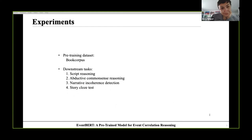Our model continually pre-trained on book corpus. For continual pre-training, we use Roberta-Large as our base model. We evaluate EventBERT on four downstream tasks, including script reasoning, abductive common sense reasoning, narrative incoherence detection, and story-closed test. All these are independent of our pre-trained corpus.